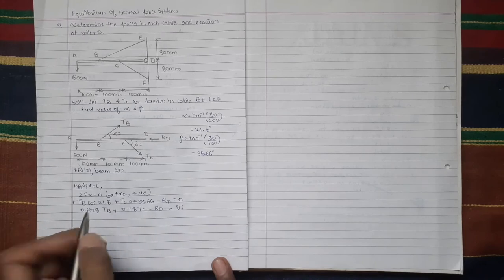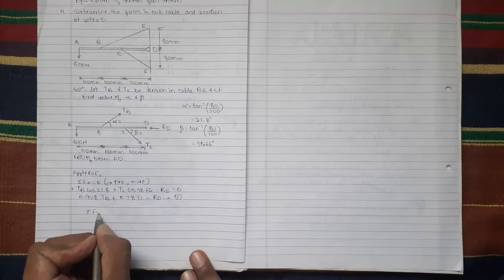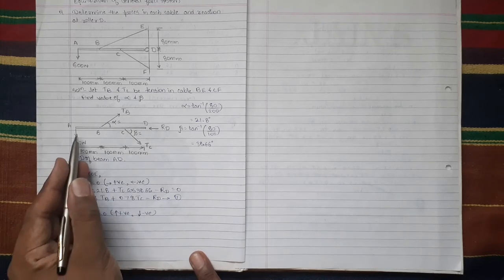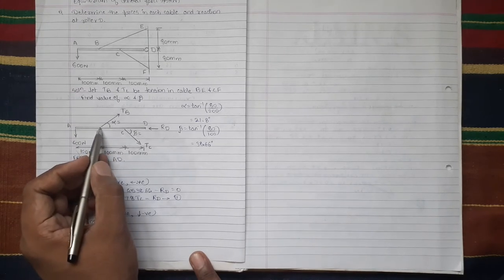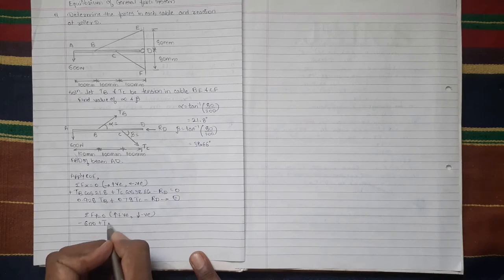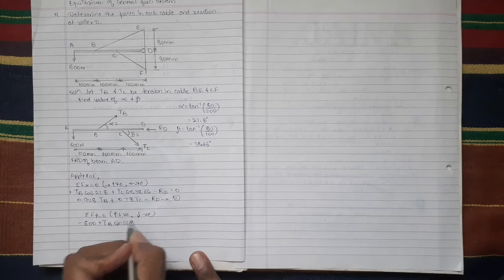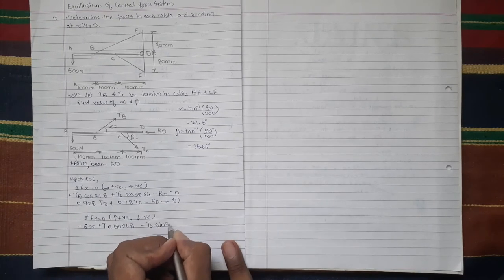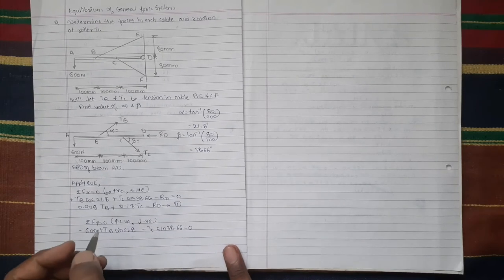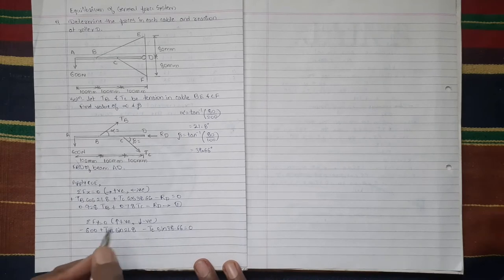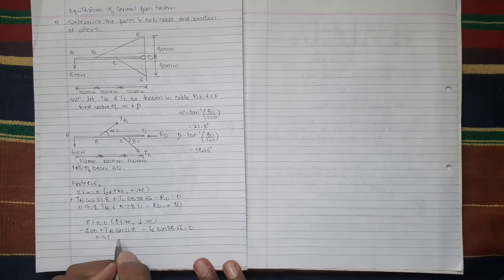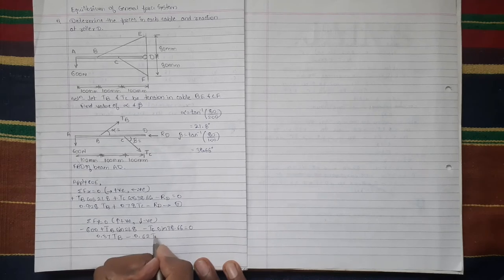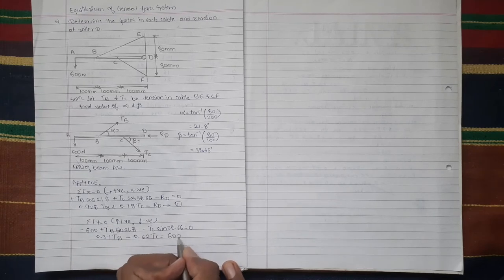We will apply second condition of equilibrium, summation Fy equal to 0. Forces going upward taken positive, forces going downward taken negative. We will take all y components. So 600, it is going downward, so minus 600. TB sin alpha, it is going up, so plus TB sin 21.8. Then TC sin beta, it is going downward, so minus sin 38.66 equal to 0. This equation is simplified. This is equation 2.